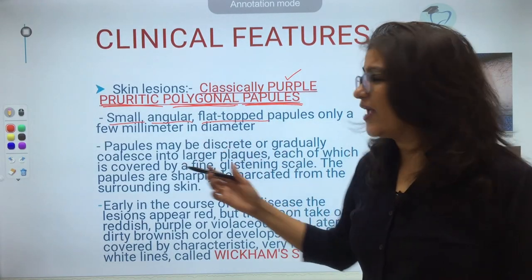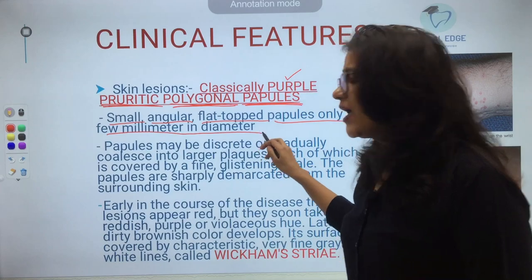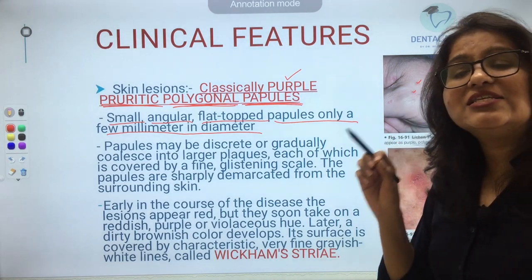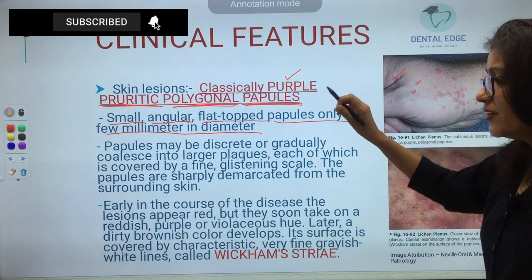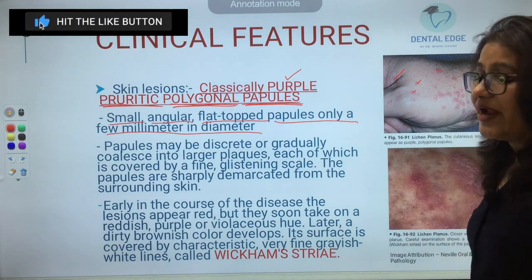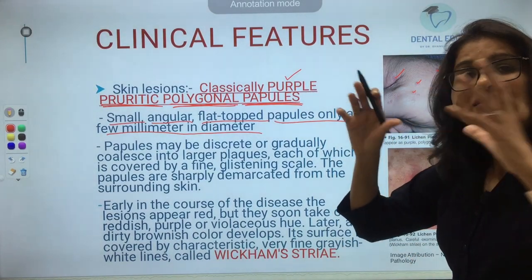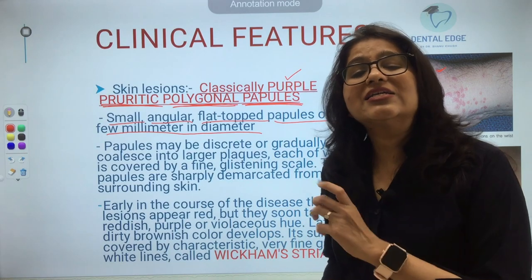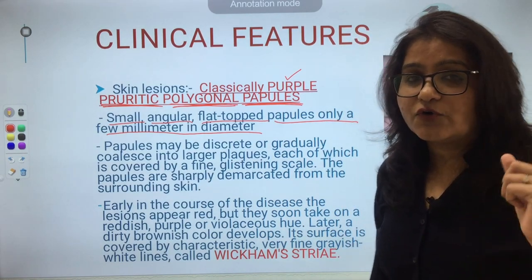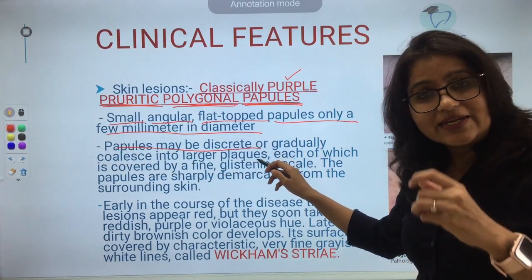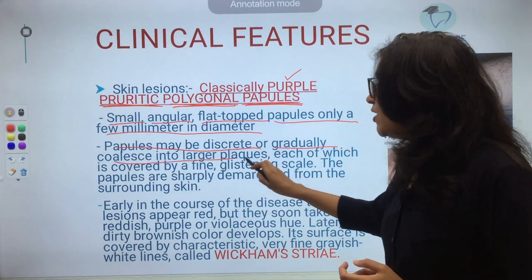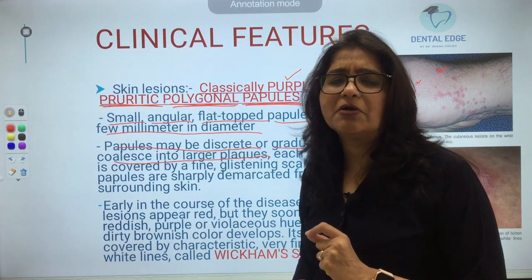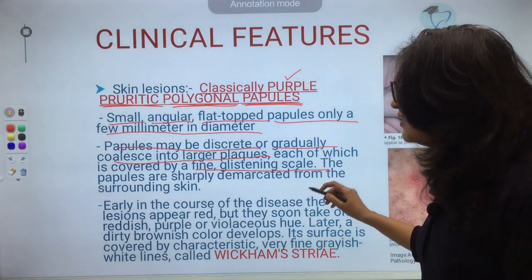Lichen planus presents as flat-topped papules, only a few millimeters in diameter. A papule is a solid raised lesion of less than 1 centimeter. These papules can be discrete or they may coalesce to form a plaque, which is a solid raised lesion of more than 1 centimeter. Each papule is surrounded by a fine glistening scale and is sharply demarcated from the surrounding skin.